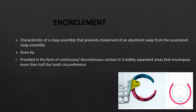Encirclement refers to how much of the clasp assembly encircles the tooth — from the tip of the reciprocal arm to the tip of the retentive terminal. The greater the encirclement, the greater the support. Any clasp assembly should offer more than 180 degrees of encirclement around the abutment tooth. In this case we can see an encirclement of at least 270 degrees.